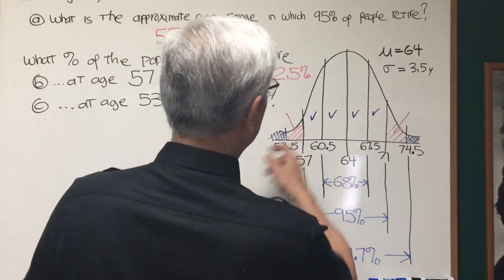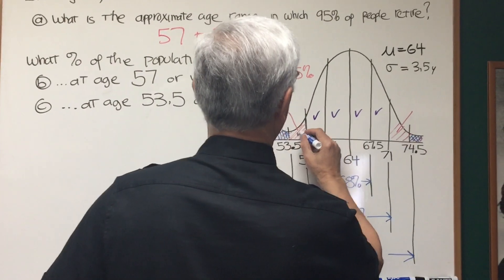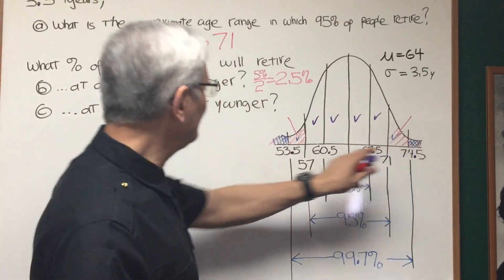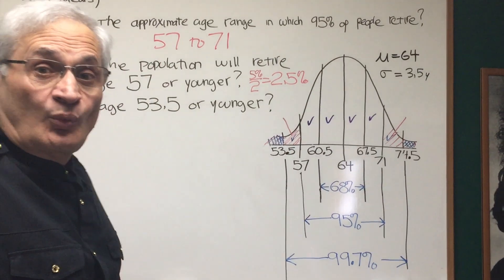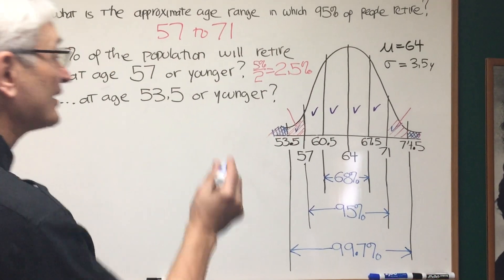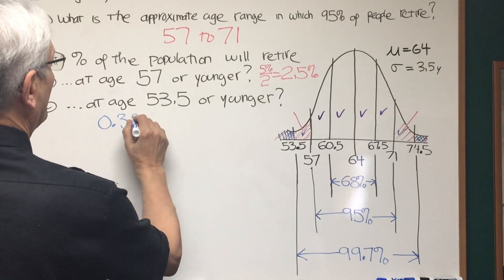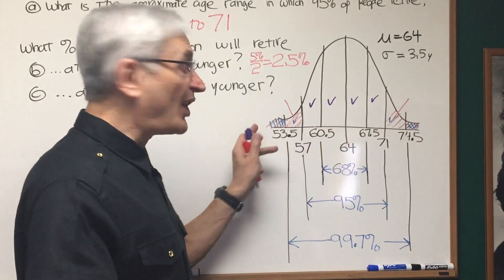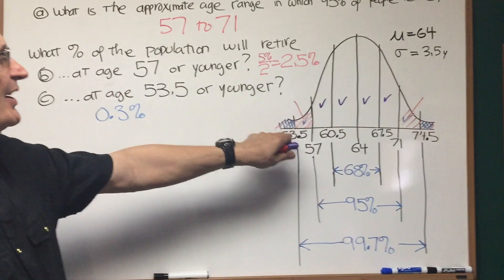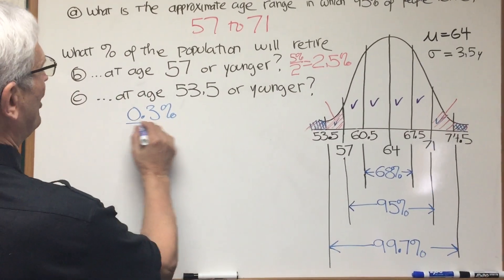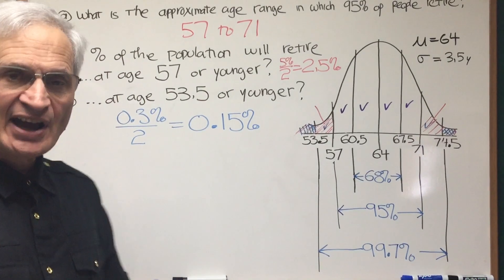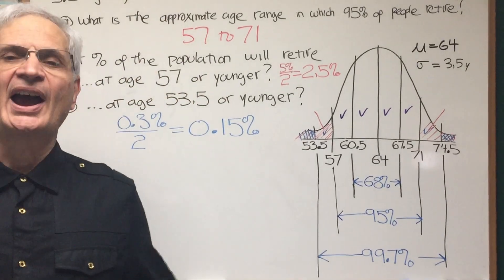99.7% of the population is going to be encompassed within each one of these areas, which has a check mark on it, leaving only these little tail ends at the end. What's the total area of those tail ends? Well, it's the difference between 99.7% and 100%, which is 0.3%. But since that's divided symmetrically along both tails, we're just looking at the portion that's on the left tail, the lower tail, less than 53.5. So we're going to divide that by 2, and our answer to that is 0.15%. And that's how to use a problem using the empirical rule and the standard normal curve.